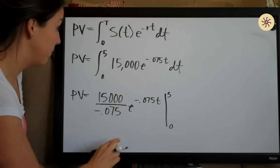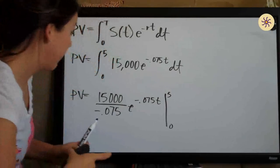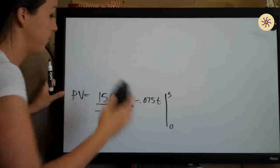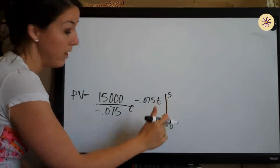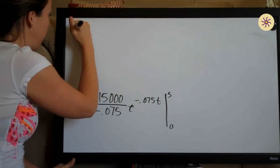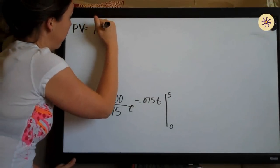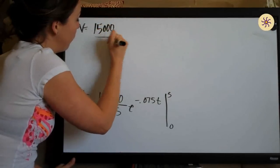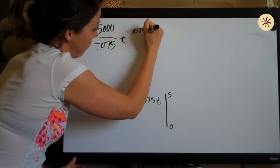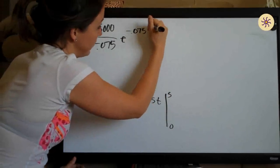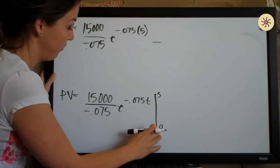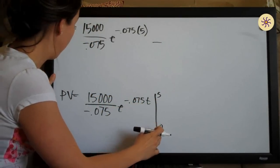Now what we need to do is plug in five and zero and solve. When evaluating a definite integral like this, we always plug in the top number first. So present value equals 15,000 over negative 0.075 times e to the negative 0.075 times five, and from that we subtract what we get when we plug in the bottom number, zero.